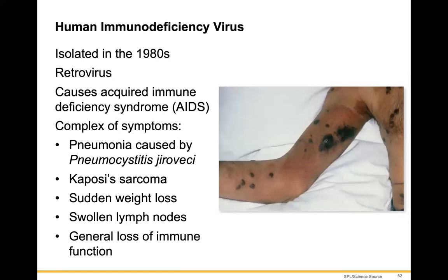HIV stands for human immunodeficiency virus. It was first observed in 1981. Dr. Fauci, who runs the National Institute of Allergy and Infectious Diseases, played an integral role in the discovery of HIV and later in COVID diagnosis and treatments. He has led that division for over 40 years and was really at the forefront of the HIV discovery.